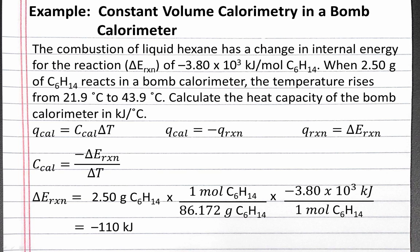The energy that was released from the reaction was absorbed by the calorimeter, and we can plug this negative 110 kilojoules into our equation above to calculate the heat capacity of the bomb calorimeter. We can also plug in our change in temperature of 43.9 degrees Celsius subtract 21.9 degrees Celsius, and completing this calculation, we should get 5.01 kilojoules per degree Celsius. This is the heat capacity of the bomb calorimeter.